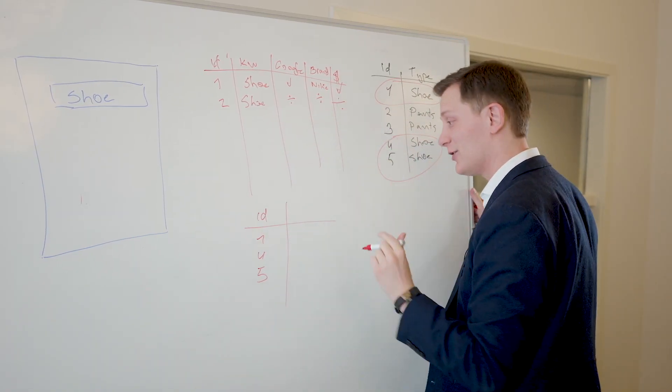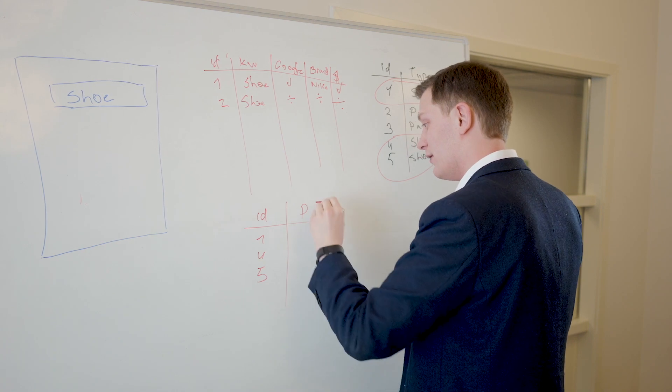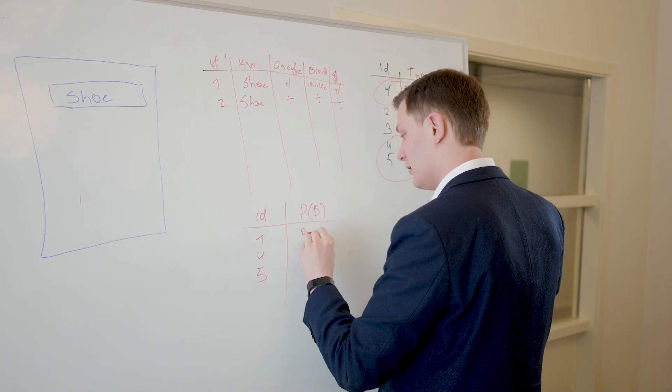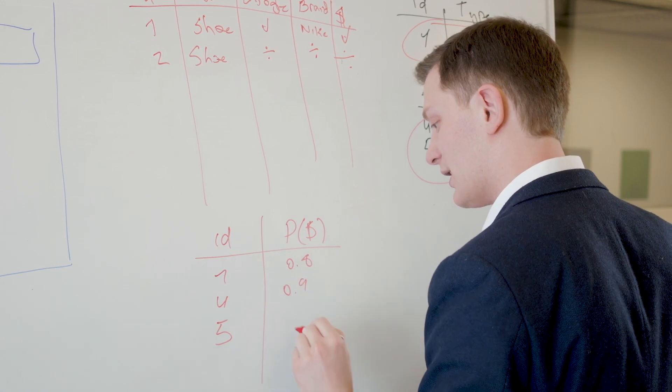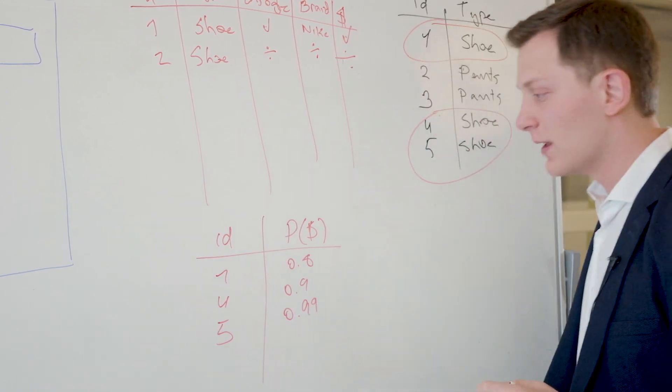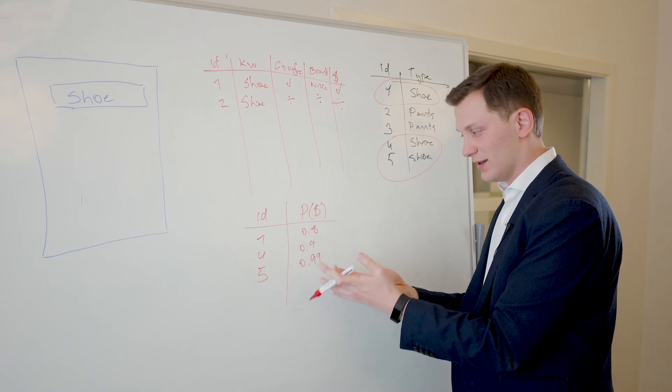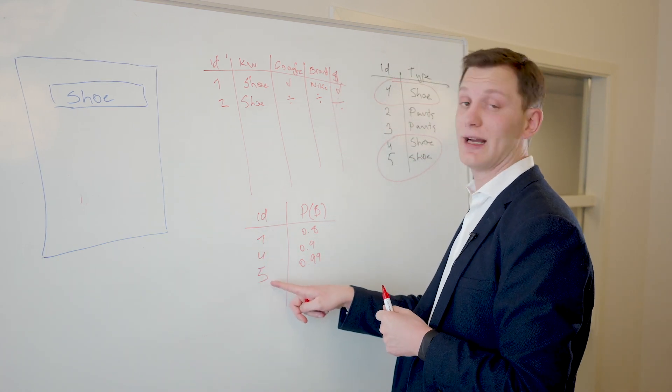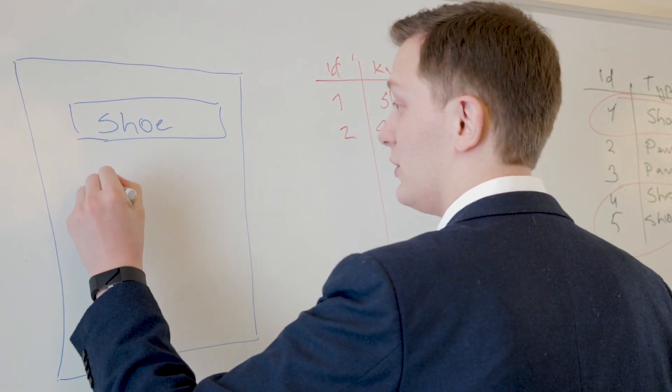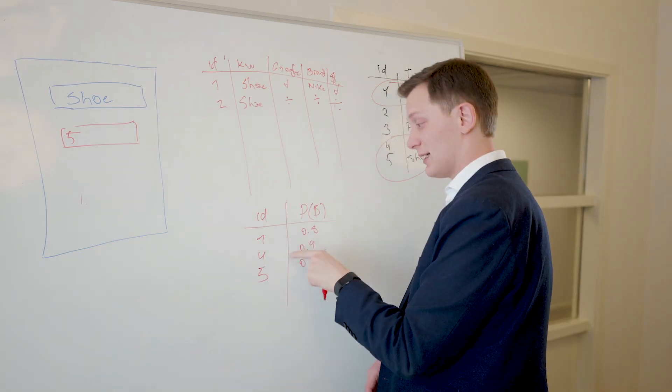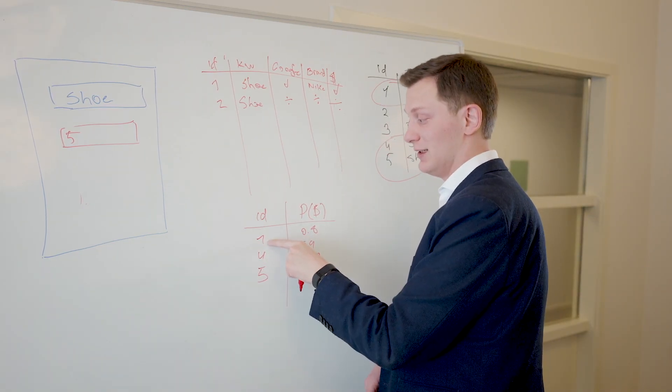And the AI based on this data will calculate that the probability of a sale is gonna be 0.8, 0.9, and 0.99. So if these are the probabilities for every single product, it means this is the most likely product, so that's the product we should show first. This is the second most likely and the least likely, so we show it in the given order.